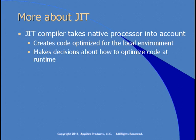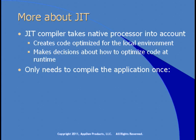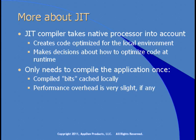If you install your application on a computer with a Pentium 3 processor and then on a computer with a Pentium 4 or better, the just-in-time compiler could make different runtime decisions about how to compile that code into native executable, so it behaves best for each individual computer. It only needs to compile the application once — the compiled bits are cached locally. The performance overhead is very slight. It doesn't JIT the entire application at once; it only compiles the parts it needs and defers compiling others until they're actually used.